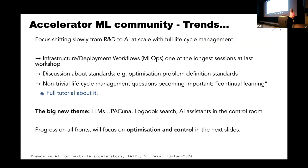The trends within the community: the focus is shifting from R&D to AI at scale with full lifecycle management — the infrastructure and deployment session was one of the longest. There is discussion about sharing standards for optimization problems across labs and doing benchmarks. Non-trivial lifecycle management questions are being raised, including continuous learning. People are also using large language models — for local search, AI assistance in the control room, and so on.